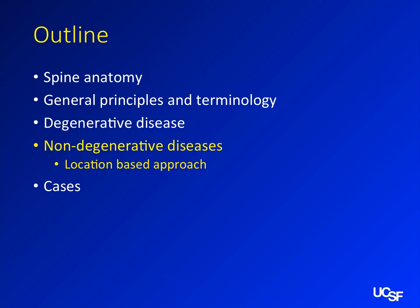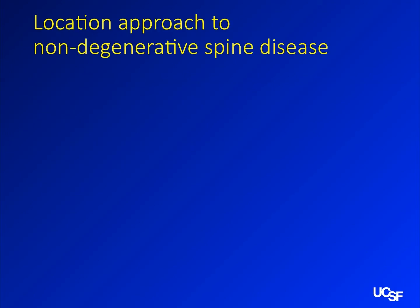We'll talk a little bit about non-degenerative diseases because I think those are important as well. If I give you a general approach — we're not going to spend too much time on it — but if you think about where the location of the pathology is, that really leads you to your differential diagnosis. Then you can look up things in the patient's chart to see what's going on. Think about things in terms of where their location is.